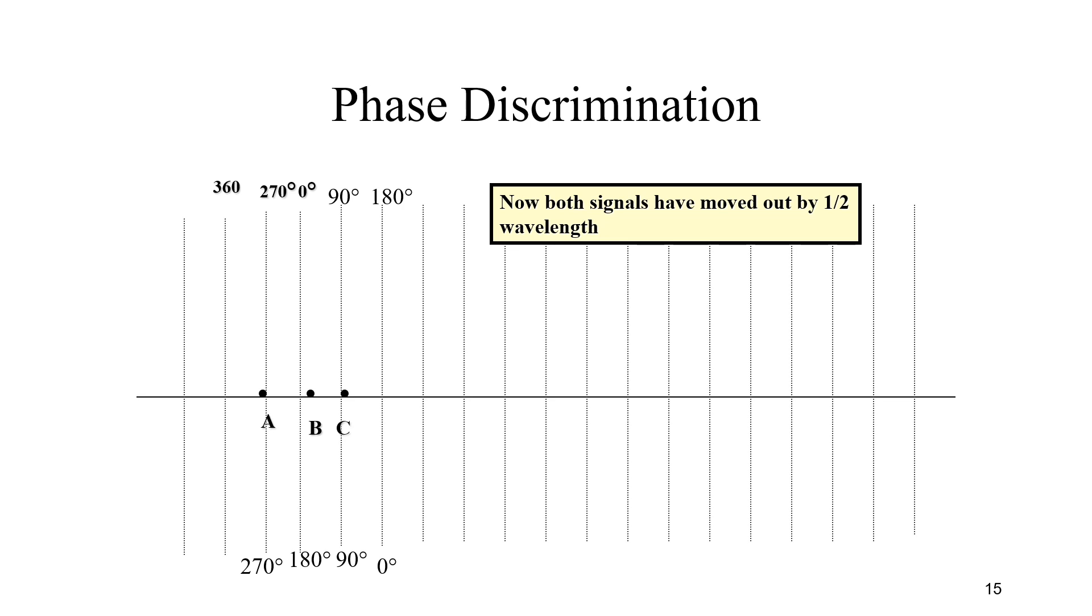You can see here now both signals have moved out by about half a wavelength. Therefore you can distinguish between the master and the two slaves that are transmitting.